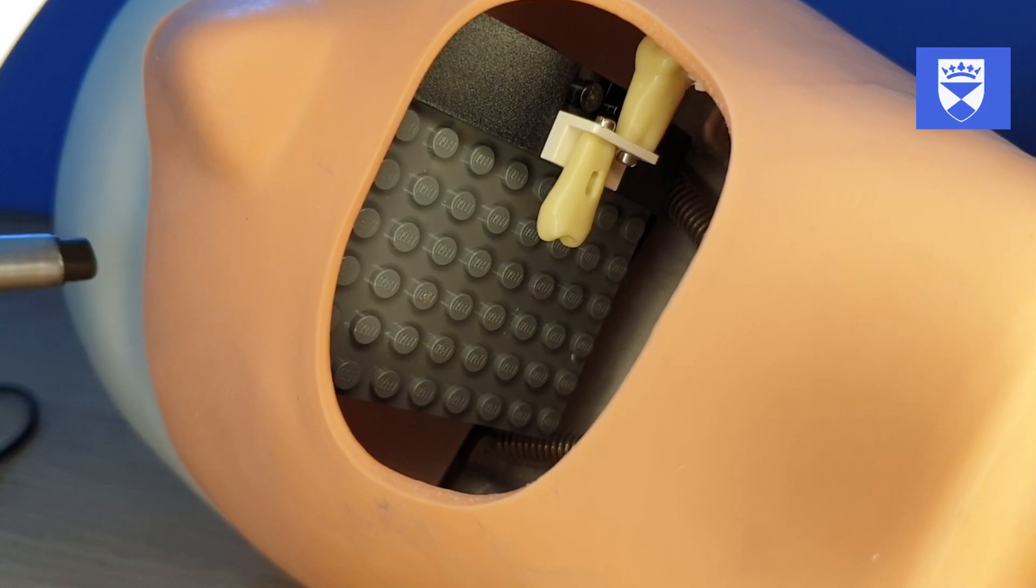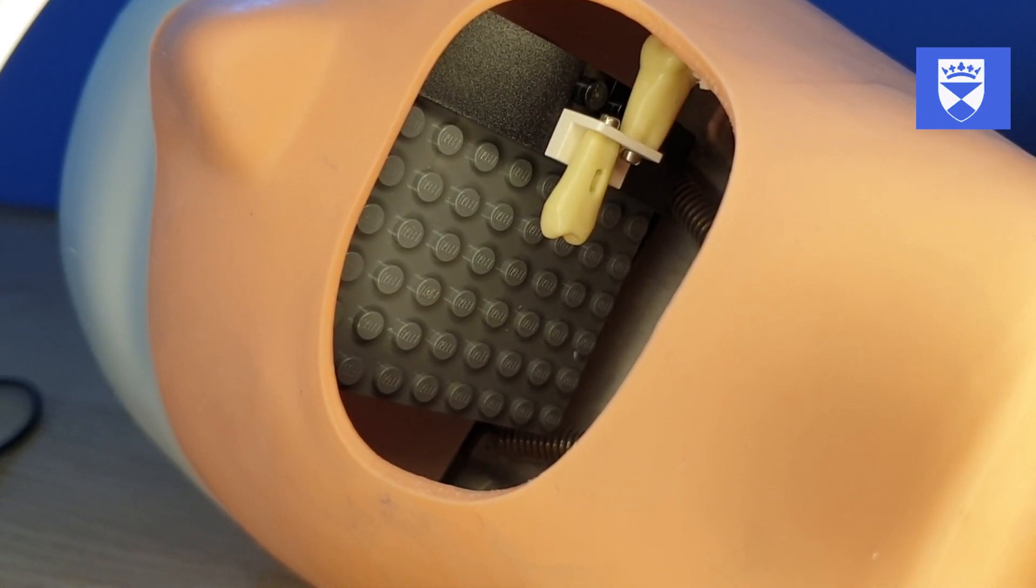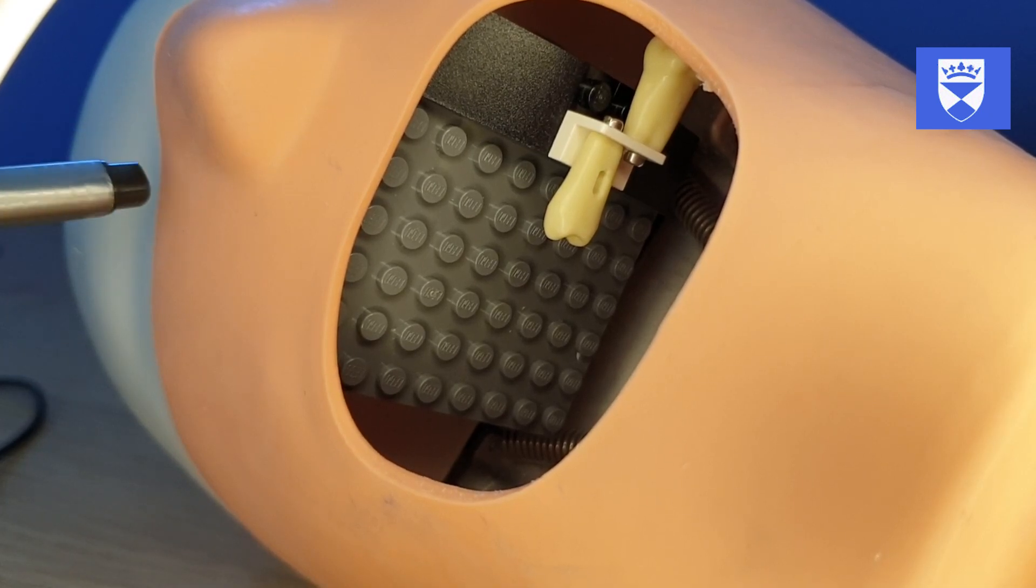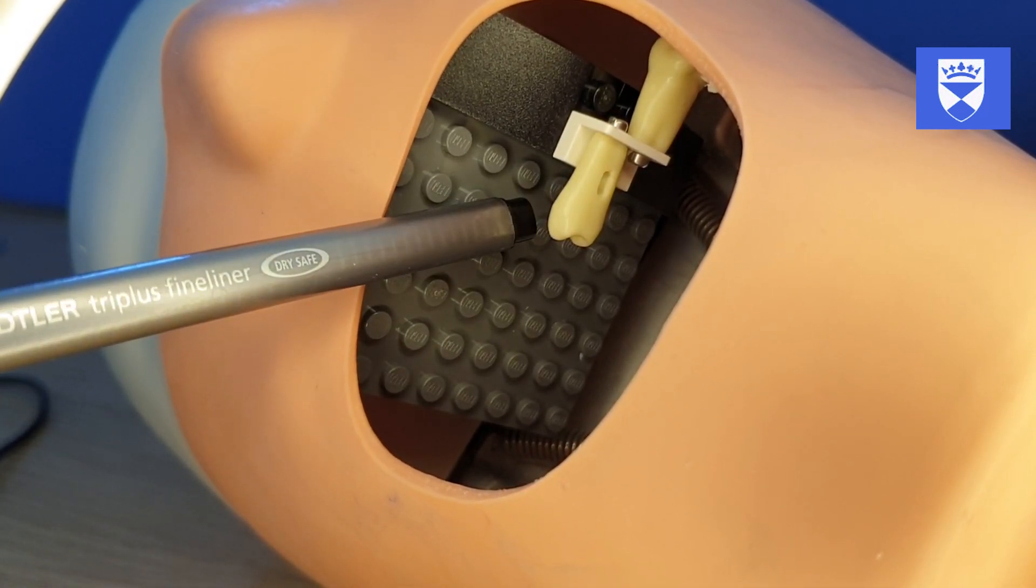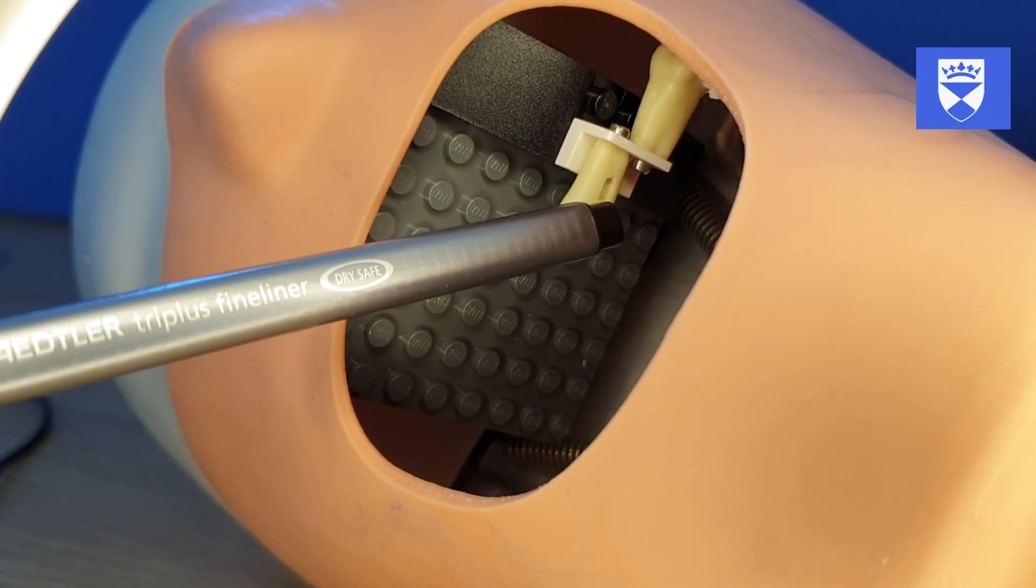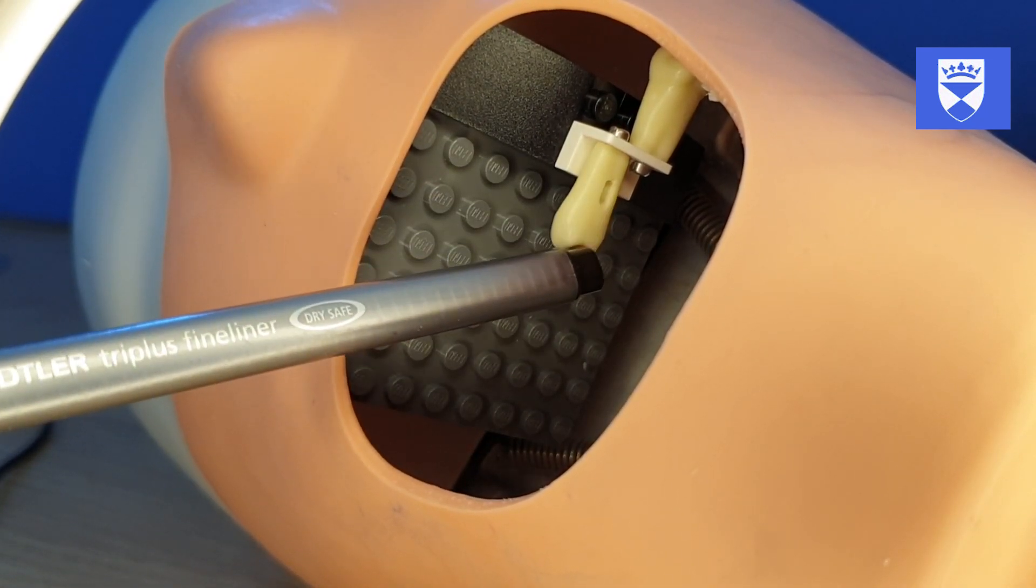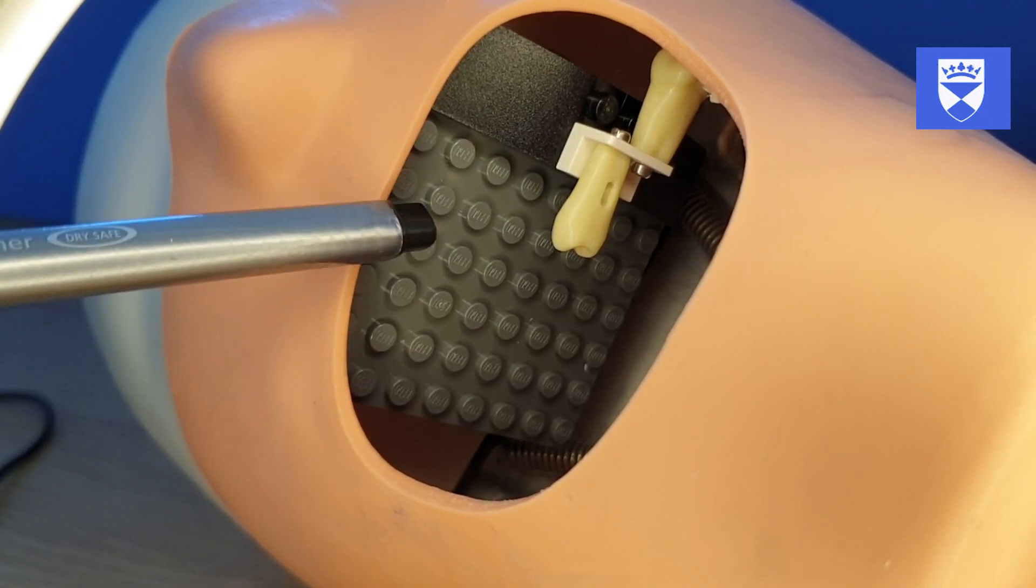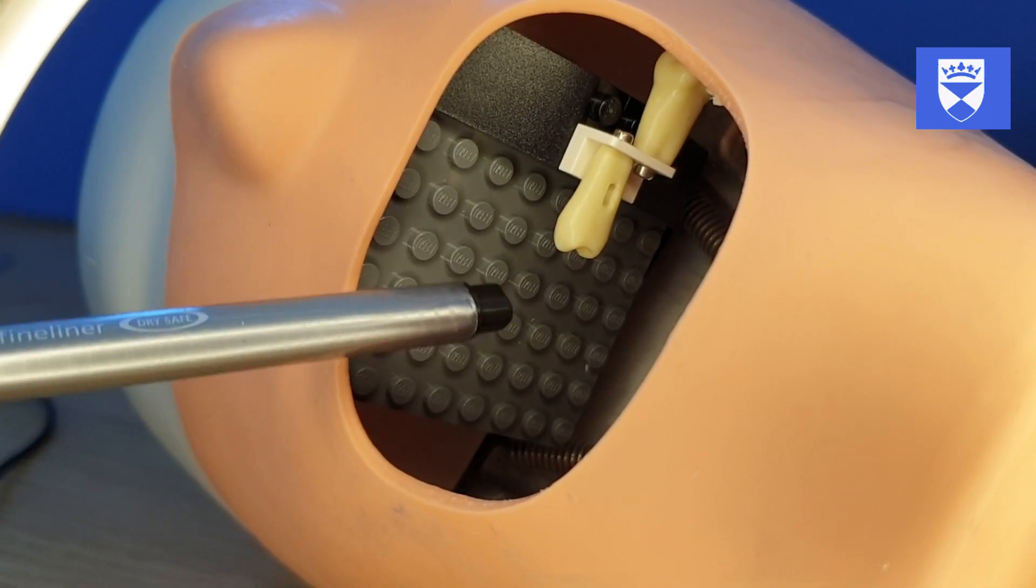Here you can see the modular universal mounting system mounted within one of our mobile mannequin heads. In this case we're simulating the maxillary arch. And the students can drill on the root surfaces wherever they want to in this arch. We can do it on the left, right, the anterior or posterior regions.